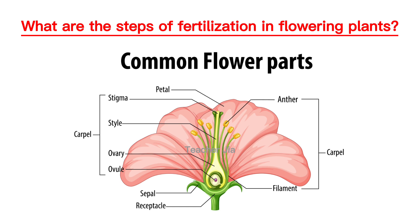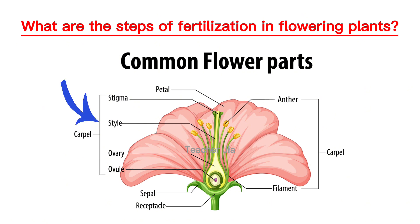In this picture here you can see all the parts of a flower. We have the anther and the filament together called the stamen, which are the male parts of a flower. On the left we have the stigma, style, ovary, and ovules, which together are called the carpel — the female parts of a flower.